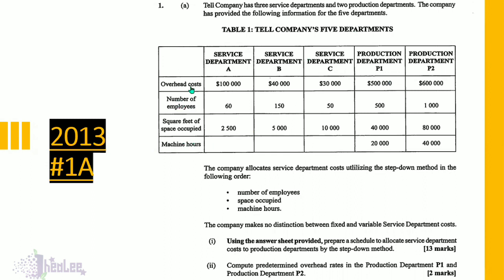We have overhead costs relating to each department. We have number of employees, square feet occupied, and machine hours for P1 and P2. The company allocates service department costs utilizing the step-down method in the following order: number of employees, space occupied, and machine hours.